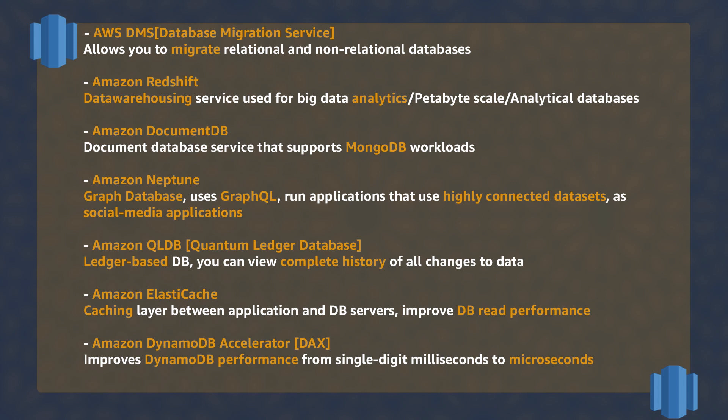Amazon DocumentDB is a managed MongoDB service. Amazon Neptune is another database engine for data sets that are highly related, as in social media applications — it uses GraphQL instead of SQL. Amazon Quantum Ledger Database is a ledger-based database through which you can review the history and changes to your data.